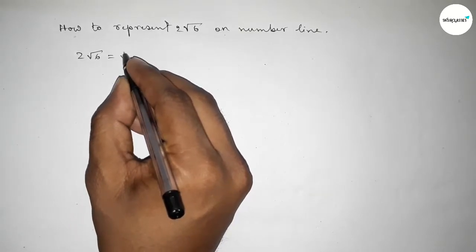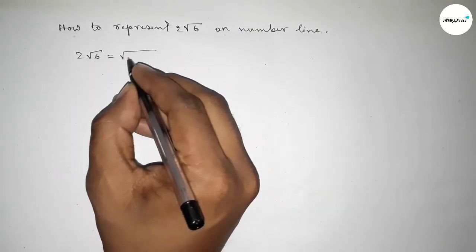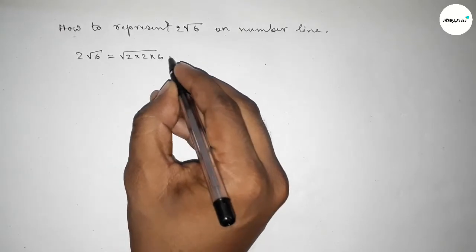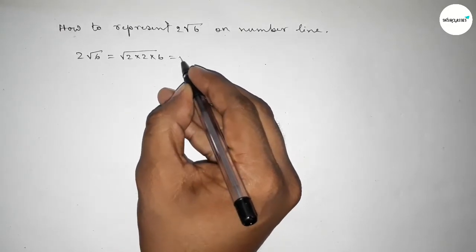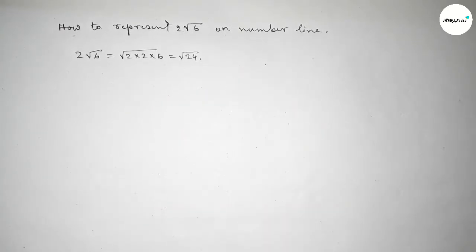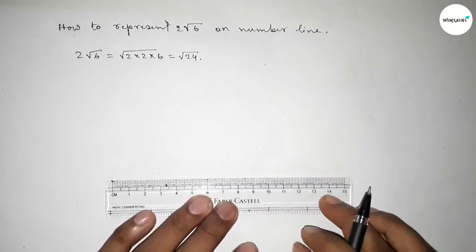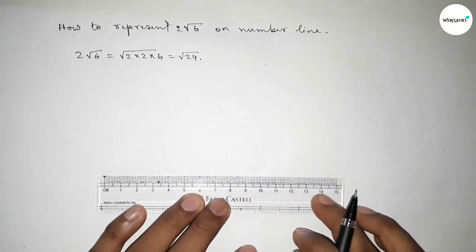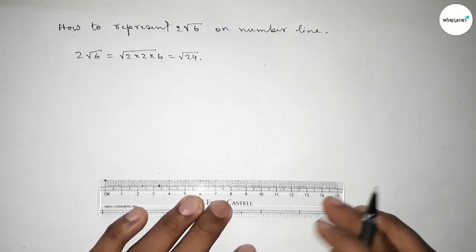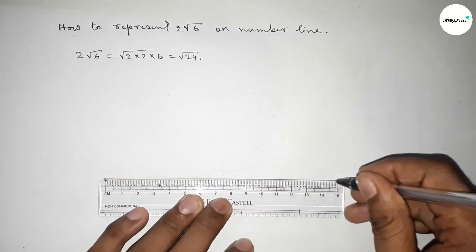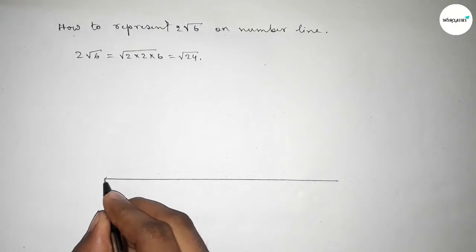First, 2√6 can be written as √(2×2×6), which equals √24. So we need to represent √24 on the number line.